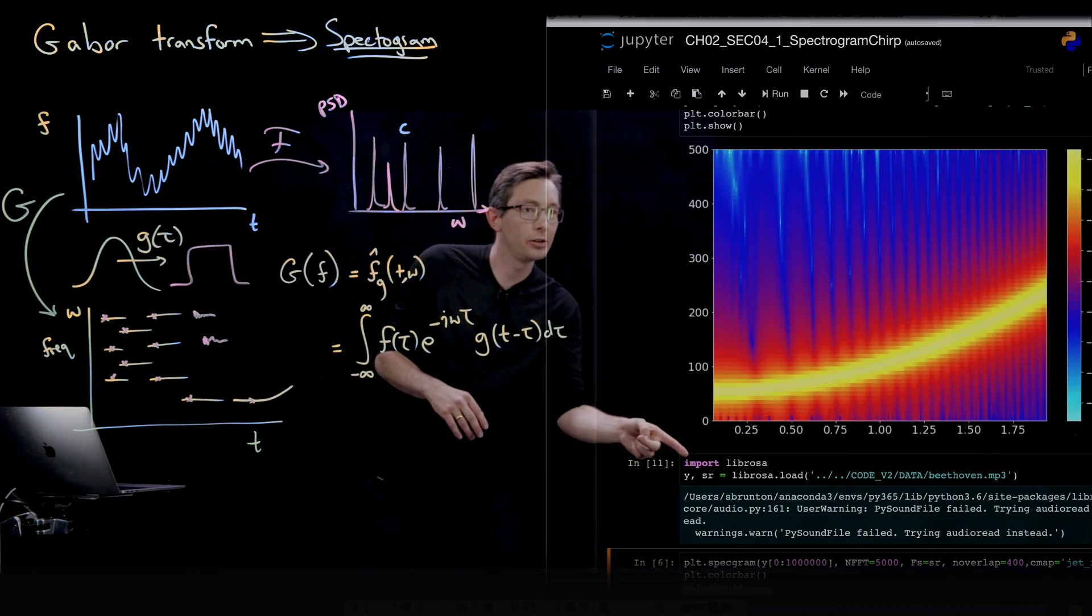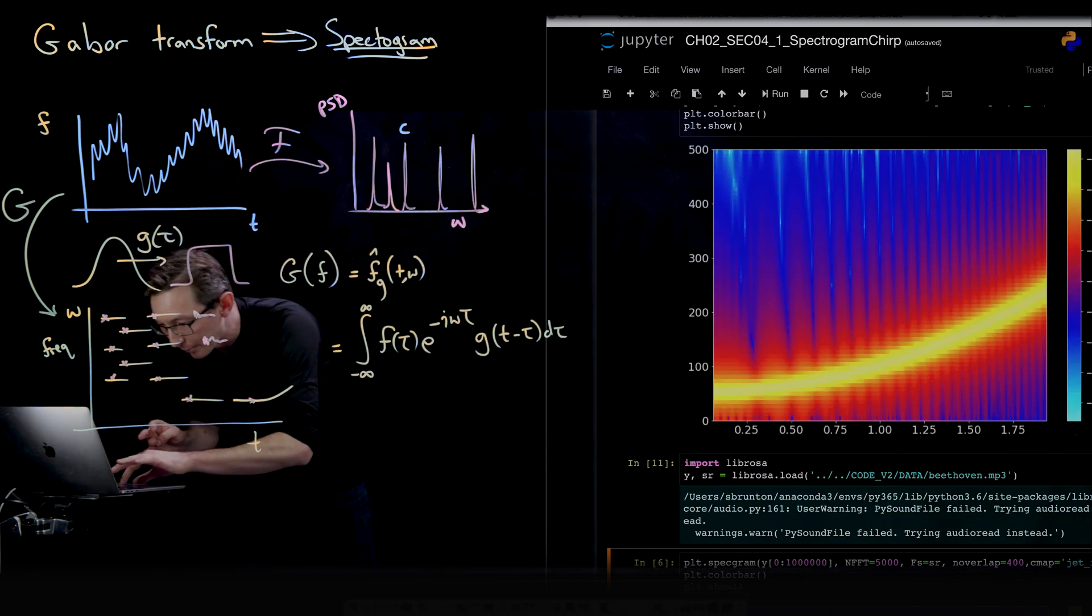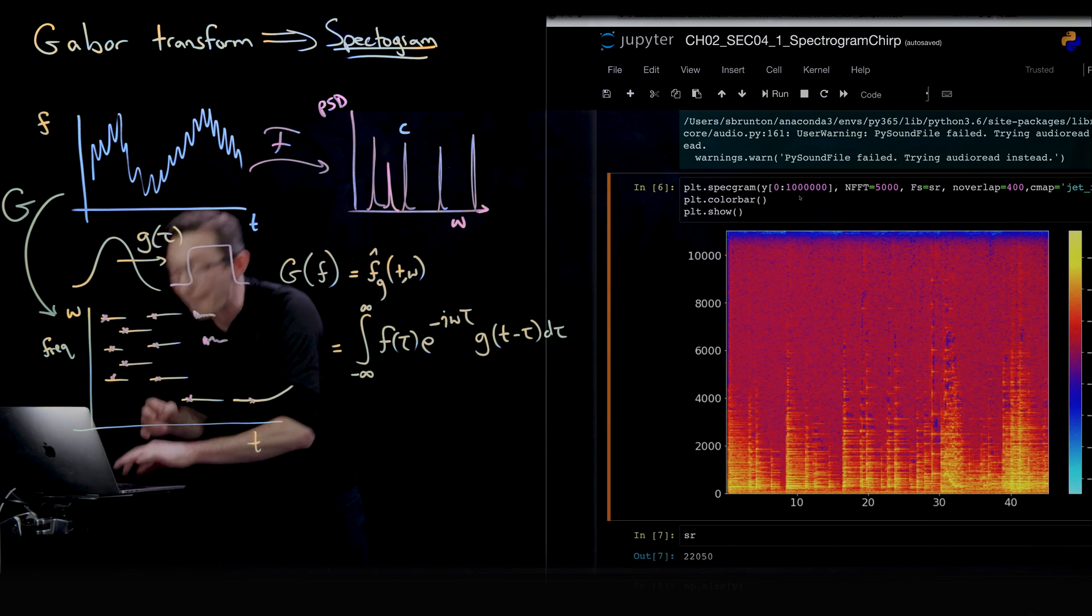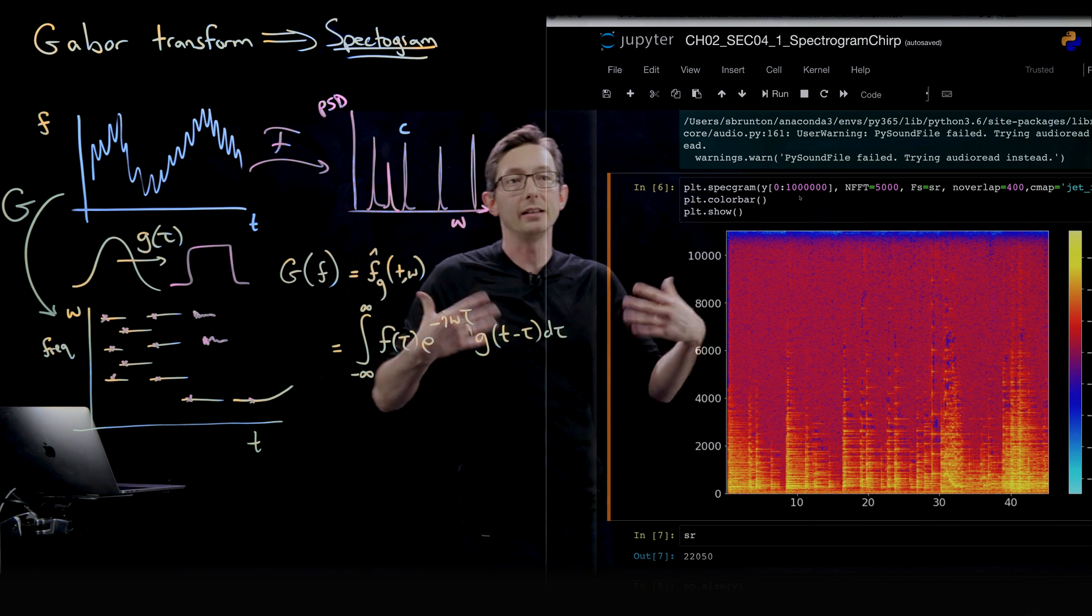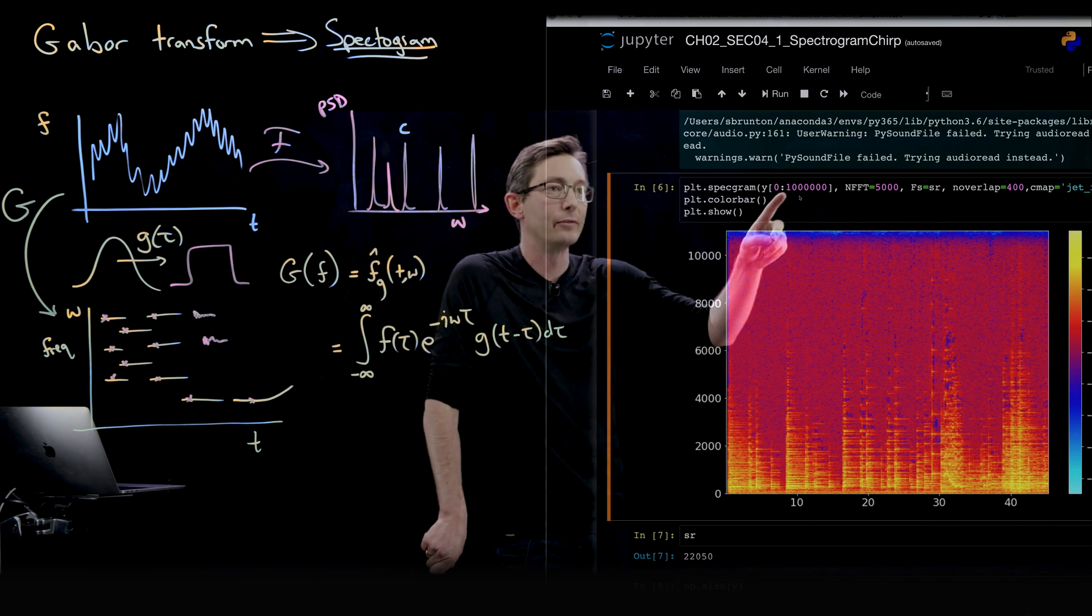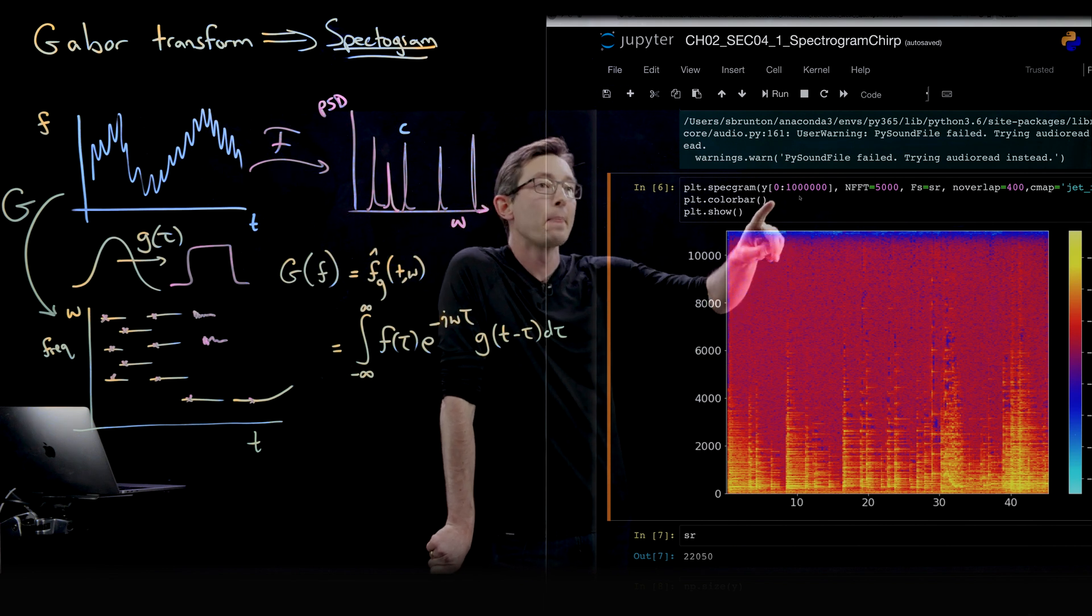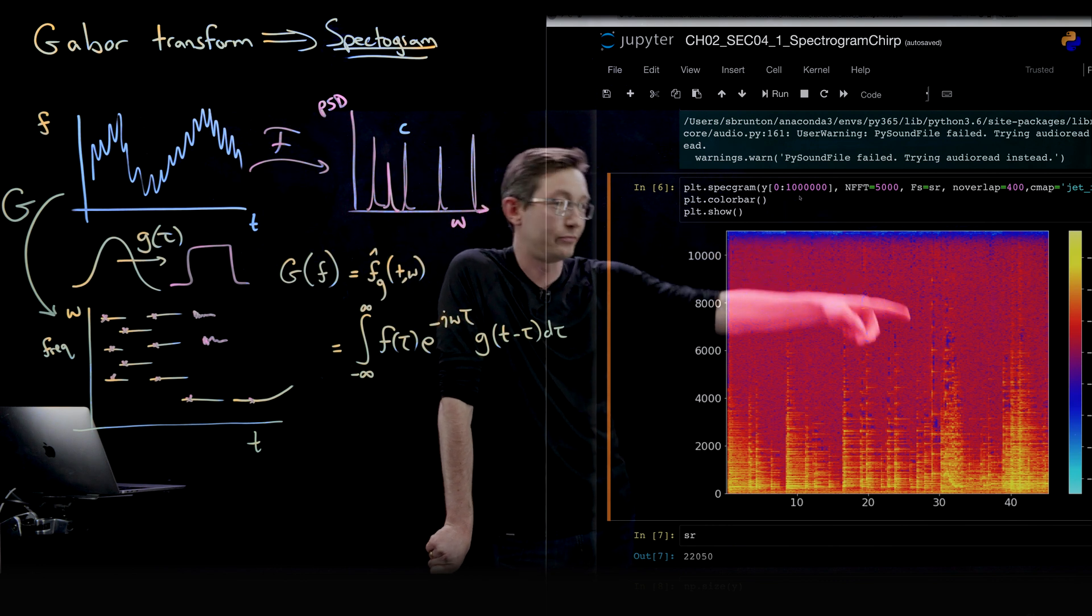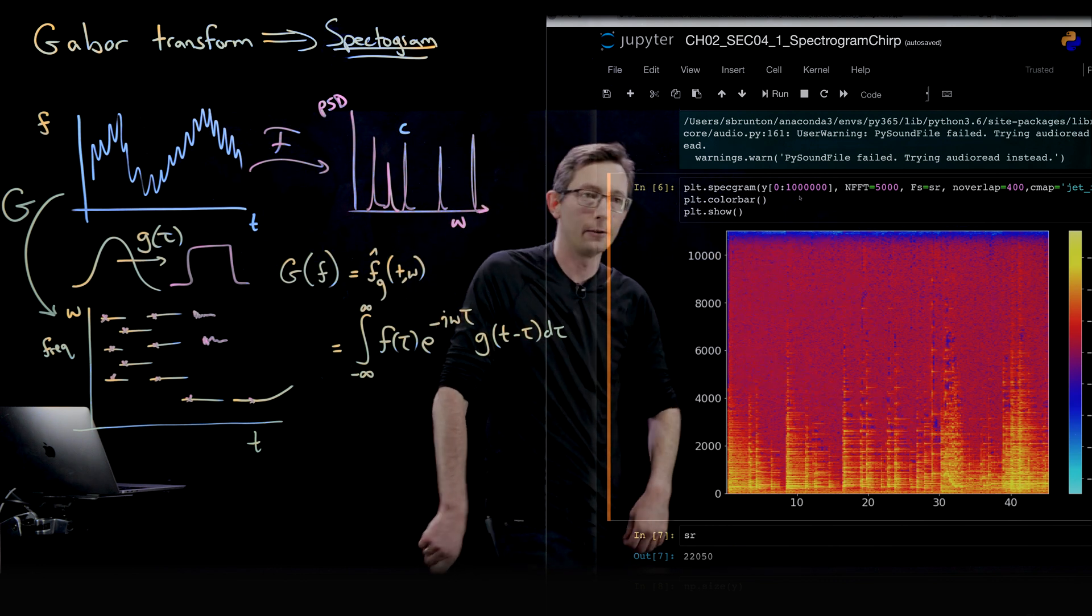So I think that my Beethoven has loaded. And now I'm going to plot the spectrogram of the first million entries. So this is highly sampled, I think 24 kilohertz or something like that, maybe 44 kilohertz. So really, really high sampling rate. And so I'm going to plot the first million data points, which I think is about 40, I guess 45 seconds of data here.